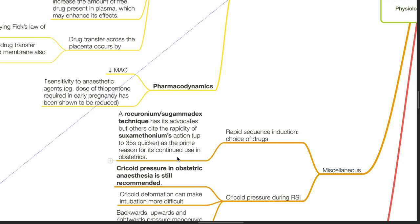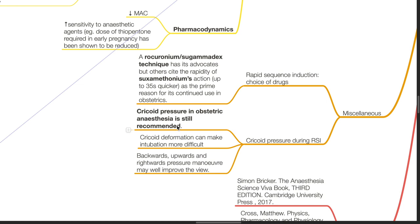Cricoid pressure during RSI: Cricoid pressure in obstetric anesthesia is still recommended. Cricoid deformation can make intubation more difficult. Backward, upward, and rightward pressure maneuver may improve the view.